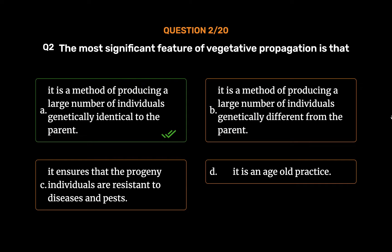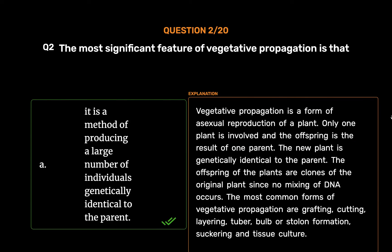It is a method of producing a large number of individuals genetically identical to the parent. Vegetative propagation is a form of asexual reproduction of a plant. Only one plant is involved and the offspring is the result of one parent. The new plant is genetically identical to the parent; the offspring are clones of the original plant since no mixing of DNA occurs. The most common forms of vegetative propagation are grafting, cutting, layering, tuber, bulb or stolon formation, suckering and tissue culture.